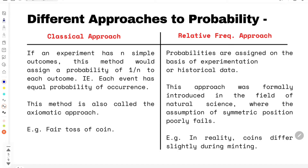The next thing we are learning in block number two, unit number five, are the different approaches to probability. Our unit talks about three different approaches. The first is the classical approach — the most common one we think of when it comes to probability. Whether it is coin tossing or rolling of dice, we are talking about the classical approach.